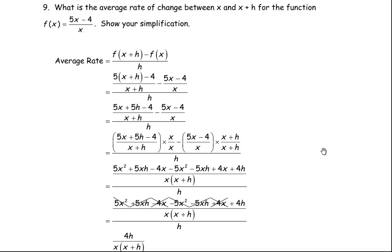In question number 9, you're asked what is the average rate of change between x and x plus h for the function f(x) = (5x minus 4) over x, and to show how it simplifies. The average rate is f(x+h) minus f(x) over h. Putting x plus h in place of x: 5 times (x+h) minus 4, over (x+h). And f(x) is the original (5x minus 4) over x. In order to subtract these fractions, we need a common denominator. Expanding the 5: 5 times x is 5x, and 5 times h is 5h. The denominators are x and (x+h).